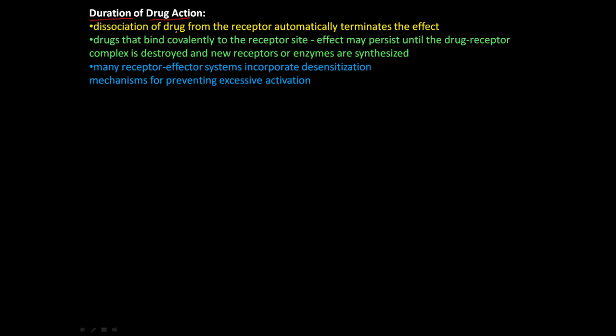The dissociation of a drug from the receptor can automatically terminate the effect. So if we have a membrane here and then we have a receptor, and if a drug comes on here, it will produce an effect inside the cell. And as soon as that drug or hormone or ligand comes off of that receptor, that's going to terminate the signal. And so that's one way that the duration of a drug action can take place.